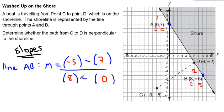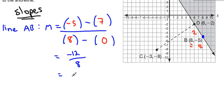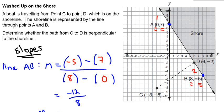So I have negative 5 minus 7. That's negative 12. 8 minus 0 is 8. And we always reduce fractions, even when they're slope, or maybe even especially when they're slope, just reduce your fractions. So negative 12 over 8, I can divide both by 4. So that gives me negative 3 over 2. And I'm going to call this slope of line AB, putting a little AB to remind myself that it's the slope of line AB.